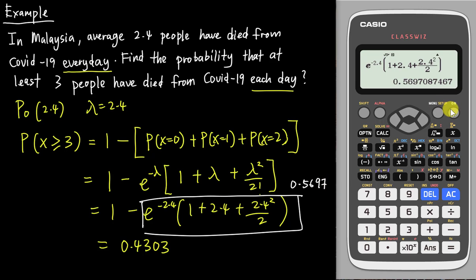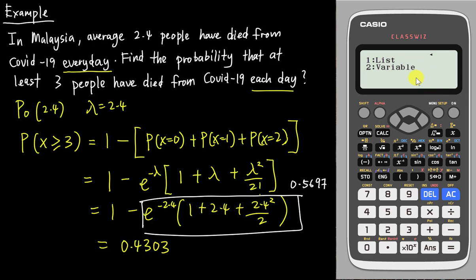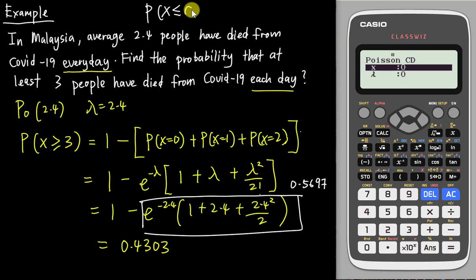Now if you want to use the calculator's Poisson CD function, you need to know the pattern of this calculator. Go into the distribution menu and come down to Poisson CD. Looking at the variable, you'll notice this calculator doesn't let you choose bigger than or less than — unlike more advanced calculators that have upper bound and lower bound options. This calculator is already preset so that X is always less than or equal to a given value. This is very important to remember so that you use the calculator correctly to get the correct answer.